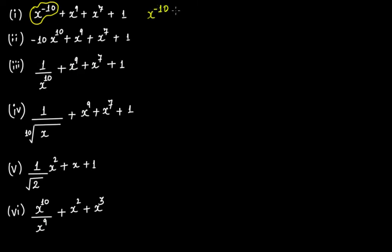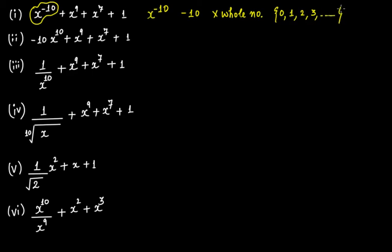Its exponent is minus 10. That is not a whole number. Whole numbers start from zero, then one, then two, then three — that set of integers starting from zero is the set of whole numbers. Now minus 10 is a negative number; it doesn't lie in this set. So it's not a whole number, therefore this is not a polynomial.